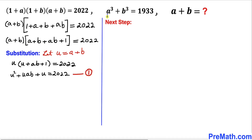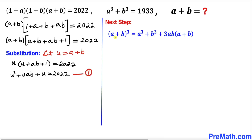Now let's focus on the second equation: a³ + b³ = 1933. Let's recall the identity: (a+b)³ = a³ + b³ + 3ab(a+b). We are going to isolate a³+b³ by moving the other term to the other side.